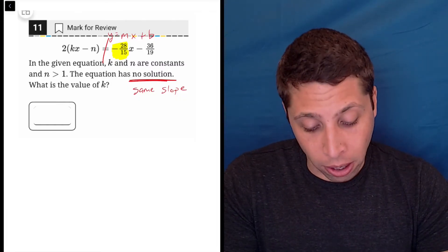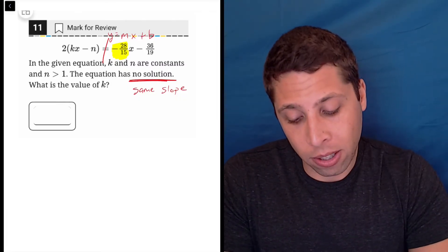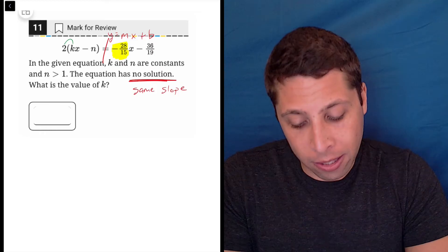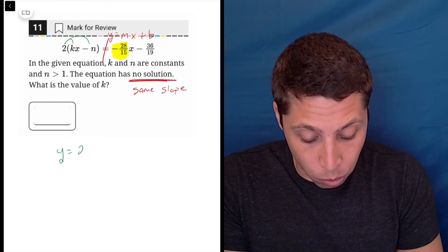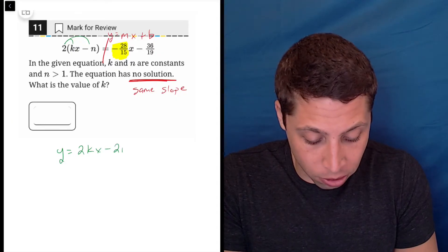On the right side, or on the left side, sorry, I got to clean this up. So this isn't really y equals mx plus b. I'm going to need to distribute this 2, so that would get me y equals 2kx minus 2n.